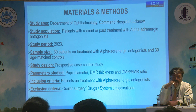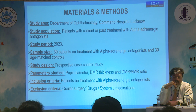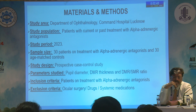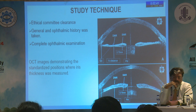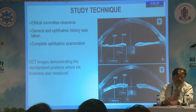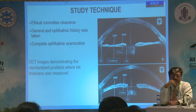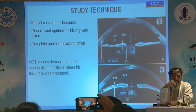The inclusion criteria covered patients primarily on alpha adrenergic antagonists — primarily BPH and hypertensive patients, with a sample size of 30 patients on treatment and 30 age-matched controls. Exclusion criteria included anyone who had undergone ocular surgery, was on long-term ocular drug therapy, or had systemic conditions especially diabetes. After ethical committee clearance, general and ophthalmic history was taken, and this is the anterior segment OCT which shows the various measurements done.